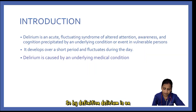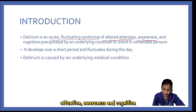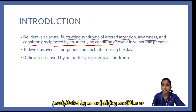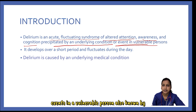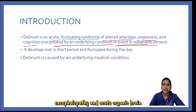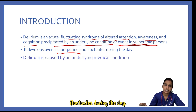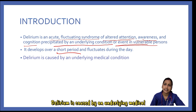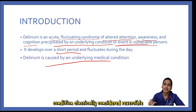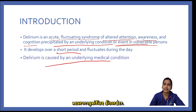By definition, delirium is an acute fluctuating syndrome of altered attention, awareness and cognition, precipitated by an underlying condition or events in a vulnerable person. It is also known by terms: altered mental status, acute confusional state, sundowning, encephalopathy, and acute organic brain syndrome. It develops over a short period and fluctuates during the day. Delirium is caused by an underlying medical condition, classically considered reversible, and is not better explained by another pre-existing, evolving or established neurocognitive disorder.